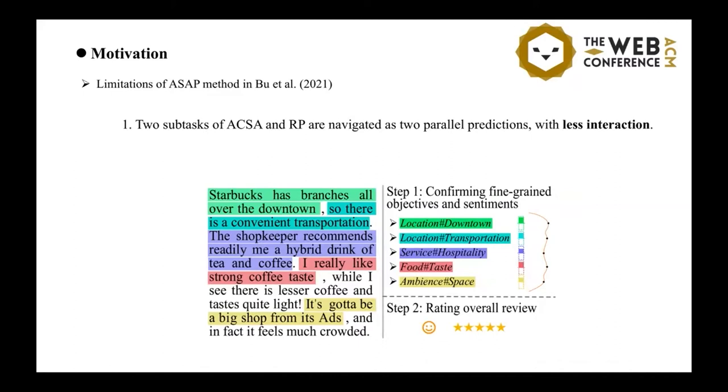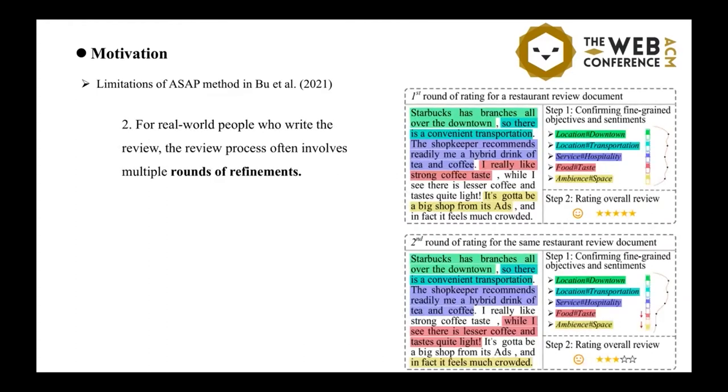As an example here, people usually determine the sentiment of each aspect of a product or service in the first step and based on which they then determine the overall rating in the second step. So it needs interaction. And secondly, according to people's behavioral manner, the review process often involves multiple rounds of refinements.